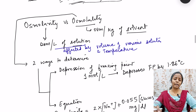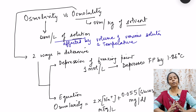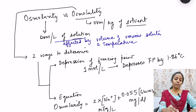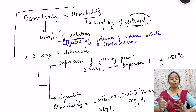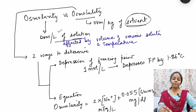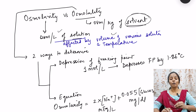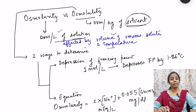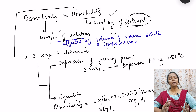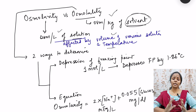Now, osmolality versus osmolarity. Osmolarity is osmoles per liter of solution, while osmolality is osmoles per kg of solvent — not solution. Solution is solvent plus solute. Osmolarity is affected by the volume of various solutes and temperature, because the total volume changes with solute concentration. Osmolality is not affected by these factors, so it is the ideal measurement. However, in books both terms are used interchangeably for practical purposes.